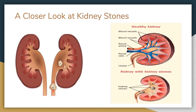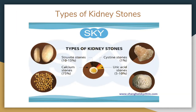This is a closer look at kidney stones in the kidney, and here we have a healthy kidney versus a kidney with kidney stones on the bottom right. Knowing the type of kidney stone helps determine its cause and may give clues on how to reduce the risk of getting more kidney stones in the future. Calcium stones are the most common, usually in the form of calcium oxalate. Oxalate is a substance made daily from the liver or absorbed from your diet. Certain fruits, vegetables, nuts, and chocolate are high in oxalate, so it's important to monitor the foods you eat to prevent kidney stones.